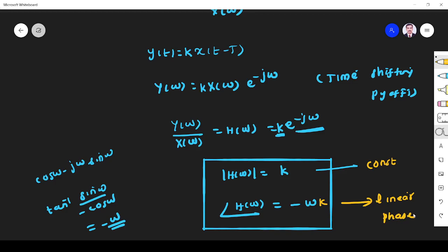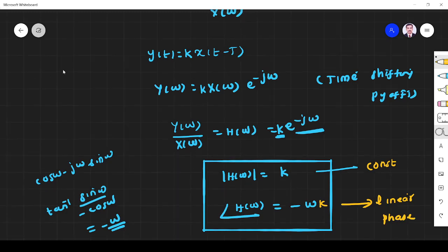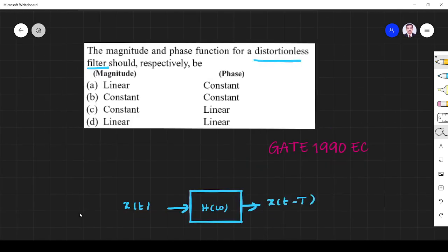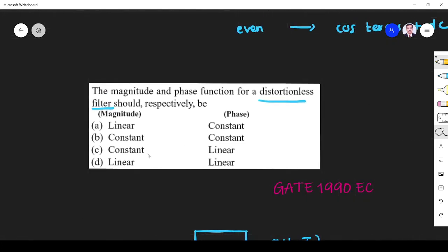So for a distortionless system, magnitude must be constant and phase must be linear. I need to choose: constant magnitude, linear phase. Option D is the answer. Thank you.